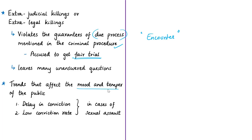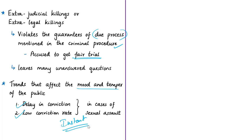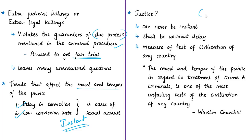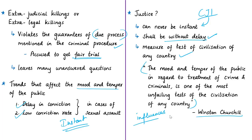Two issues affect public mood in sexual assault cases: delay in conviction and a low conviction rate of just 27% for rape cases. Due to these structural weaknesses, the public demands instant justice. As civil service aspirants, our stance should align with the Chief Justice of India — justice can never be instant, yet justice must be delivered without delay. The author quotes Winston Churchill: 'The mood and temper of the public in regard to the treatment of crime and criminals is one of the most unfailing tests of the civilization of any country.'